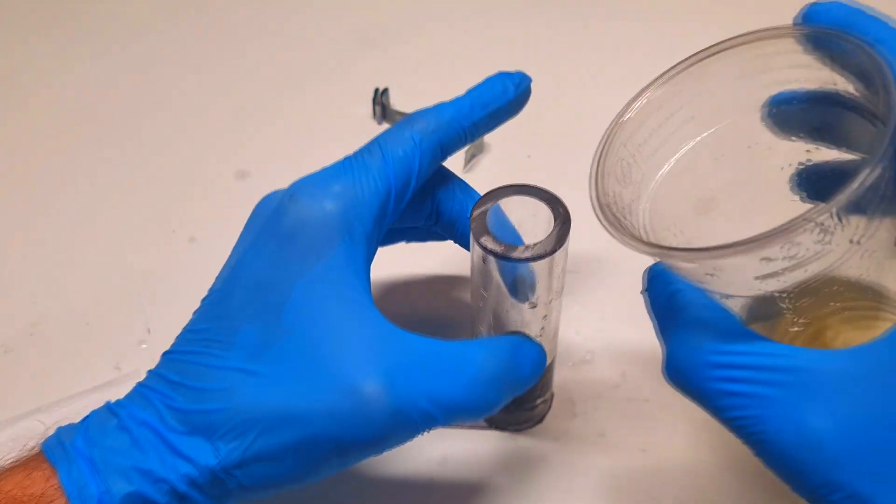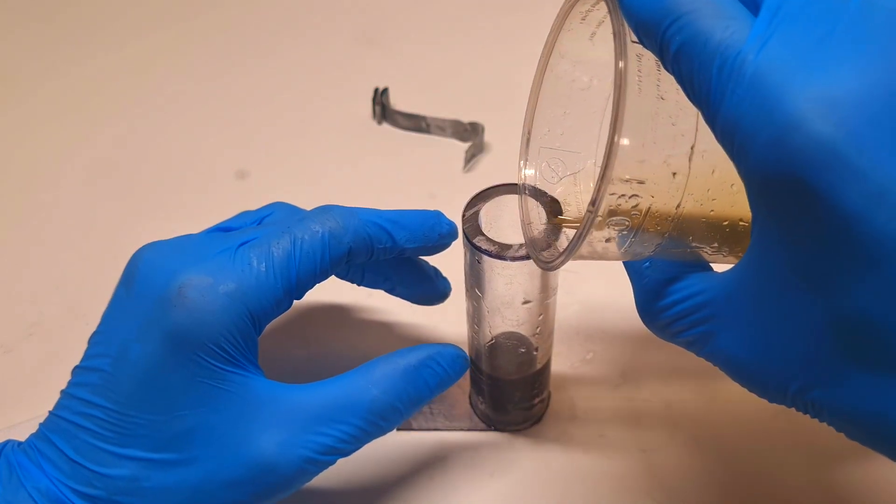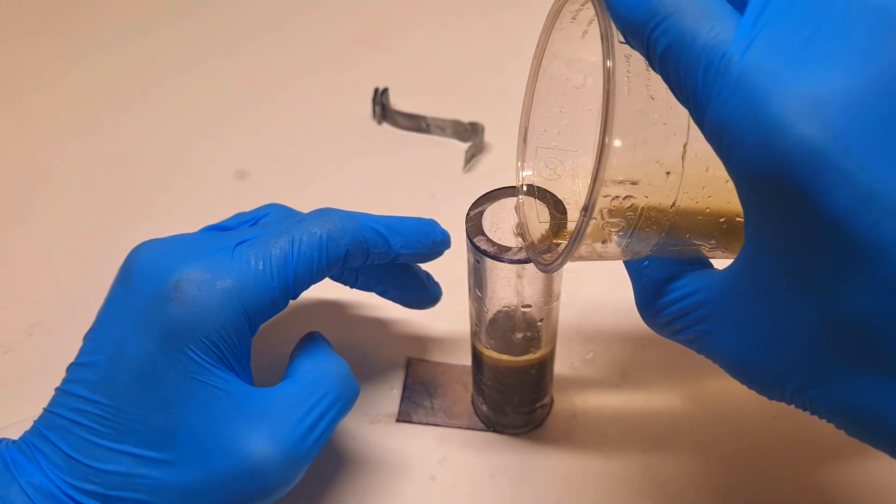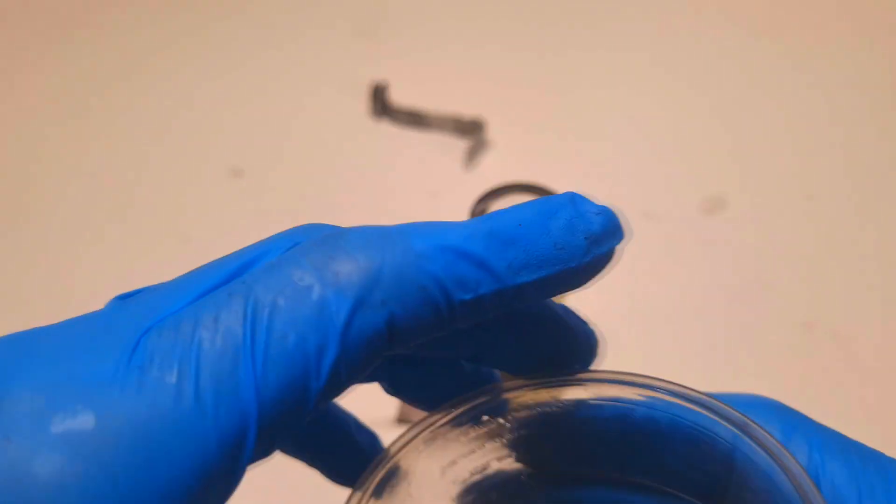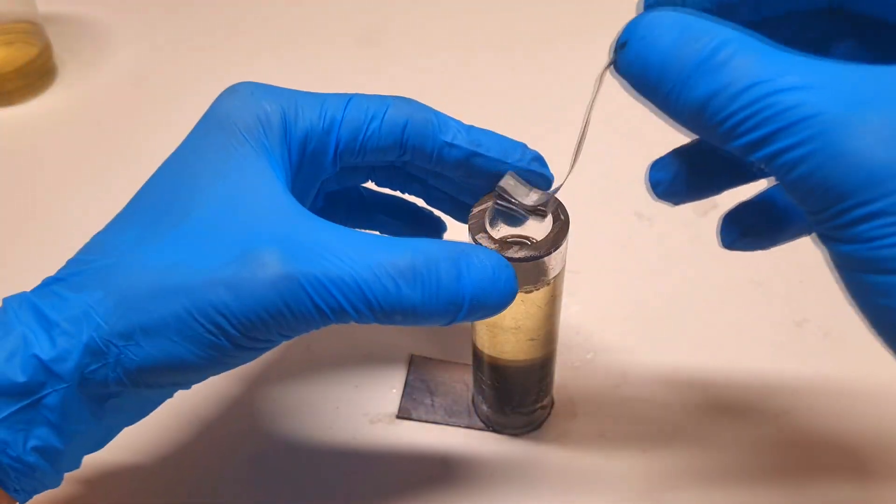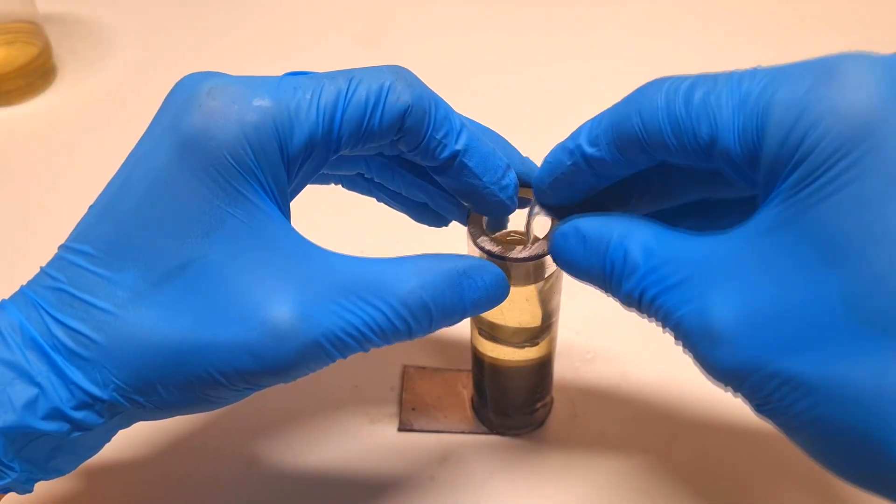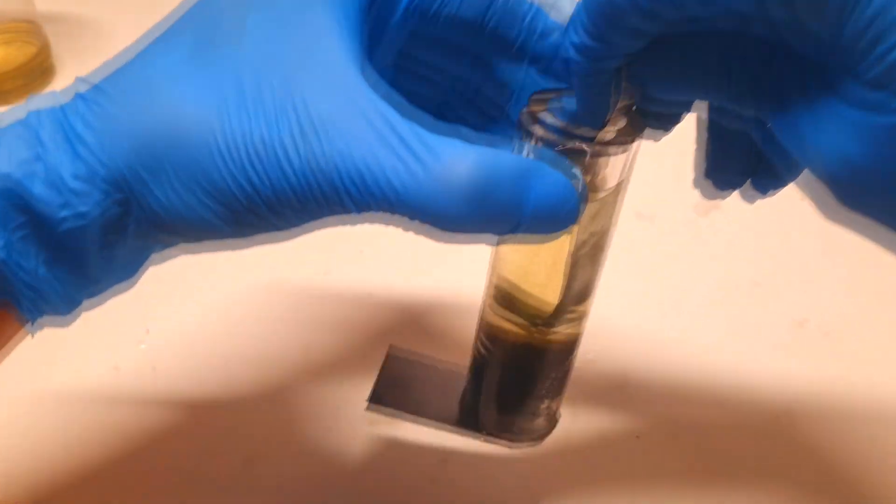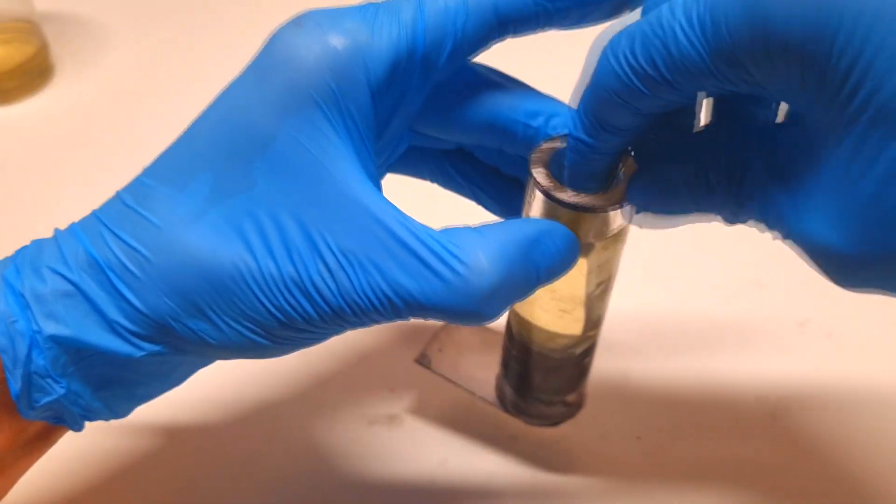And now I'll fill the tube with the electrolyte like so, and now for the finish I will put the zinc electrode into the cell.